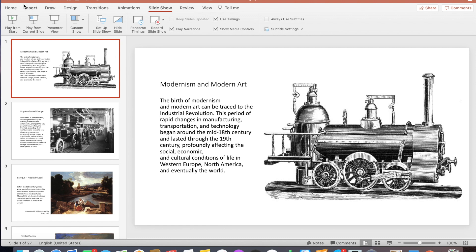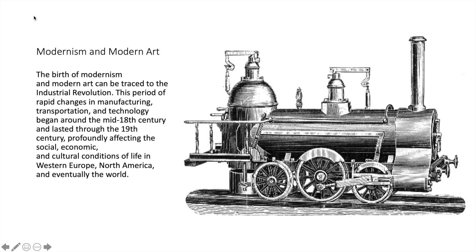Let's start with the definition of modernism and modern art. The birth of modernism and modern art can be traced to the Industrial Revolution. This period of rapid changes in manufacturing, transportation, and technology began around the mid-18th century — around 1760 or so — and lasted through to the end of the 19th century, profoundly affecting the social, economic, and cultural conditions of life in Western Europe, North America, and eventually the entire world.